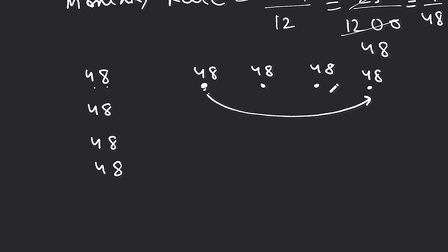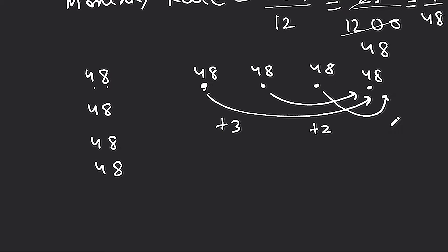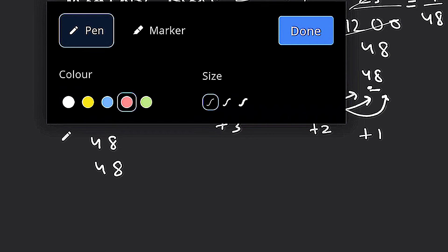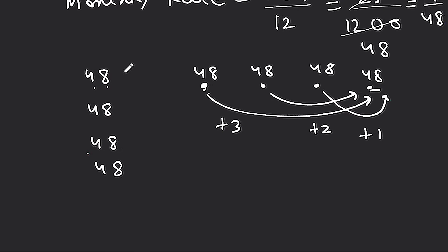For the first installment paid 3 months early, we add 3. For the second installment, we add 2. For the third, we add 1. For the fourth, there is nothing extra to add. So all together we add 3 + 2 + 1 + 0 = 6. This is how simple interest installment works: we add the extra months of interest for each payment.